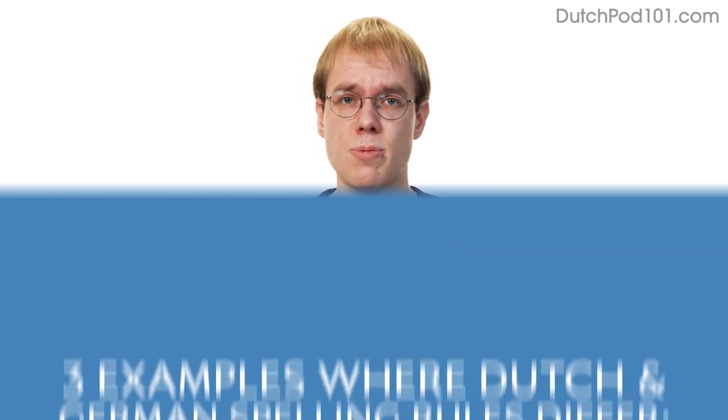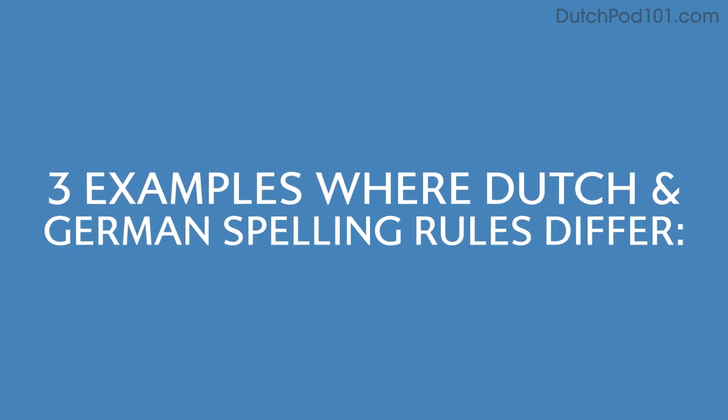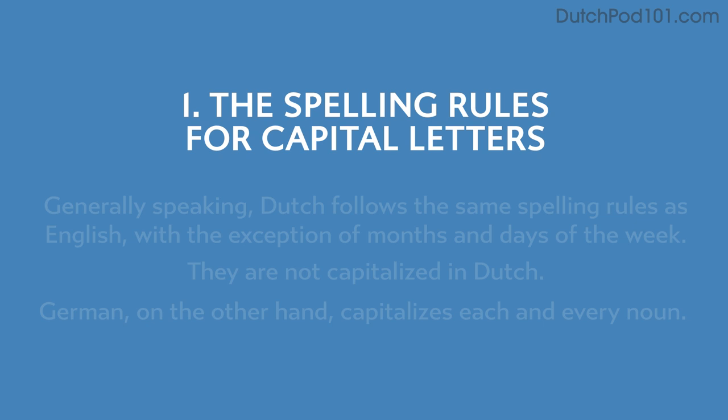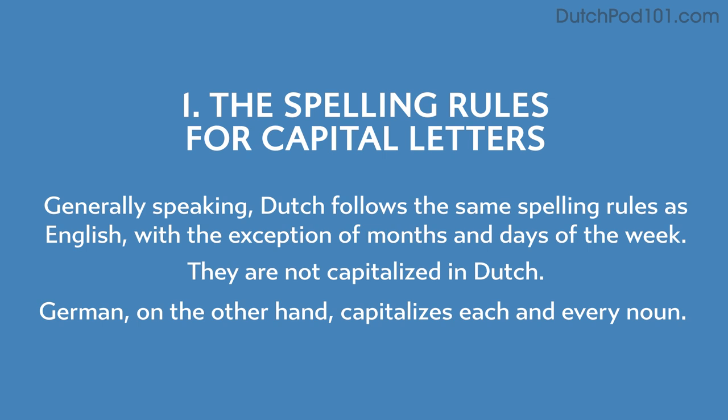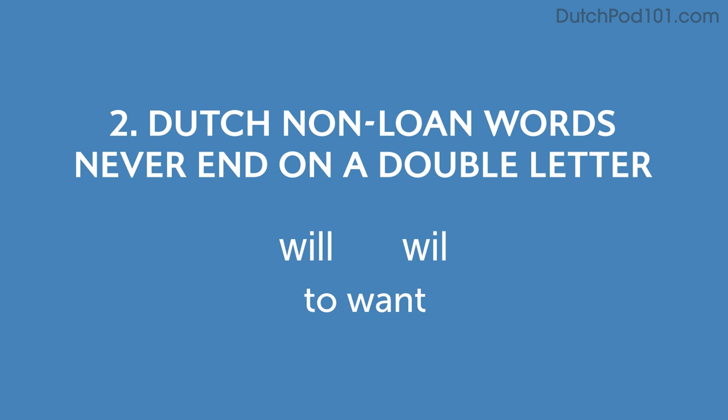So you may be wondering what the other differences are. Because of the high German consonant shift, a lot of words are spelled differently — but this is not where it stops, as German and Dutch spelling rules continue to differ on various other aspects. Here are three examples. The first: the spelling rules for capital letters. Generally speaking Dutch follows the same rules as English, with the exception of months and days of the week, which are not capitalized in Dutch.